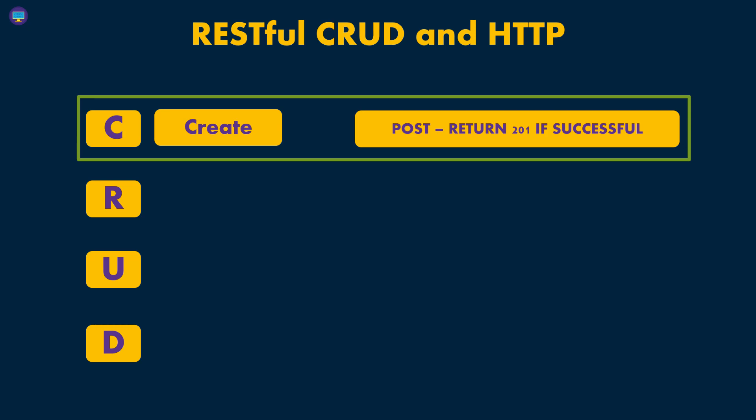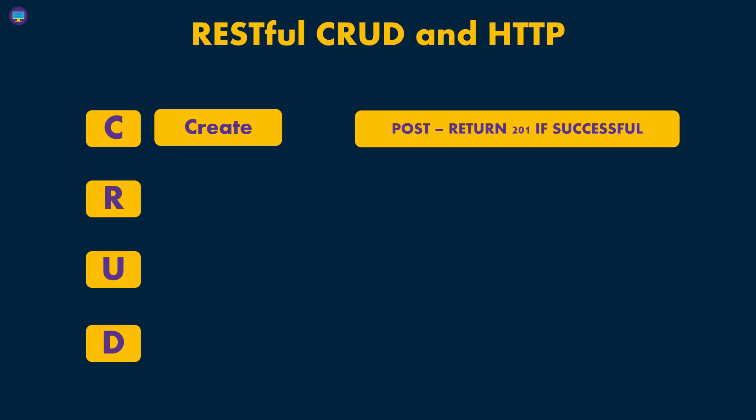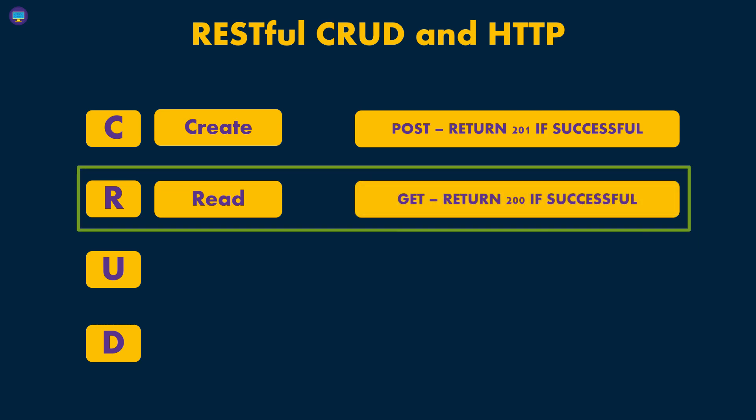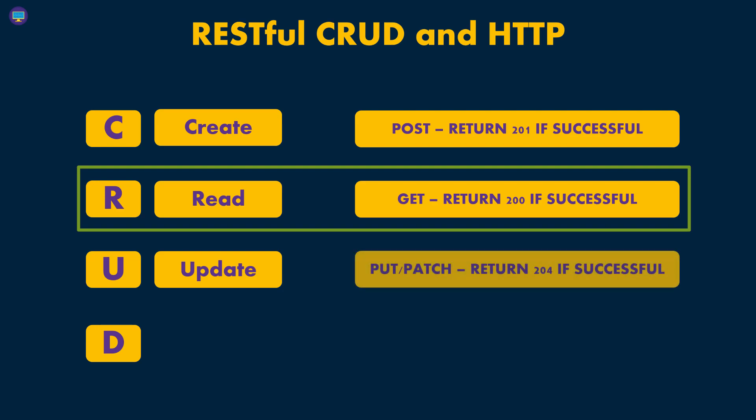The server, or the RESTful API or the RESTful web service, is able to understand that when you communicate with them using the HTTP protocol and you send the POST method, your intention is to create a resource on that specific server. And the same goes for read — for reading data, you send a GET request, so you're getting information or getting a resource. When you send the GET request, the server understands that you're trying to read data, not create, update, or delete data.